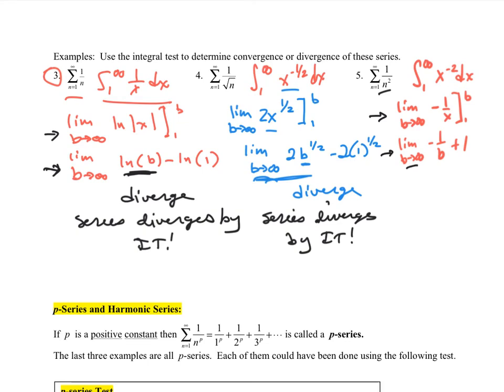What happens when we take b going to infinity? This whole term will go to 0 because the denominator goes to infinity. So this limit is 1 for that integral. That tells me the series converges by the integral test.